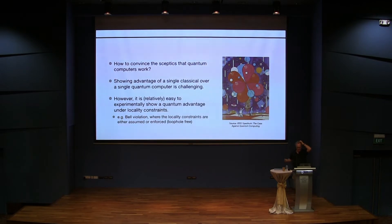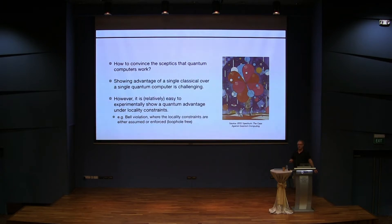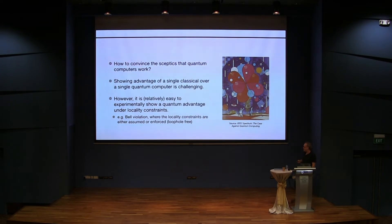The basic issue is that it's actually quite difficult to show an advantage for quantum computers. But when we think about quantum theory in general, and in particular communication, then we see that in a setup with some communication constraints, we have been able to show quantum advantages for a long time already. Every Bell violation is a quantum advantage and it's even robust under noise. So these constraints in communication are actually helpful in exhibiting quantum advantages.